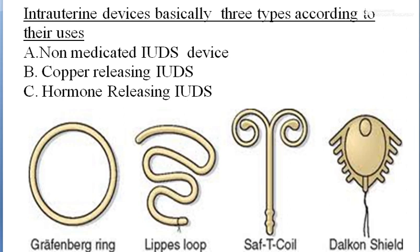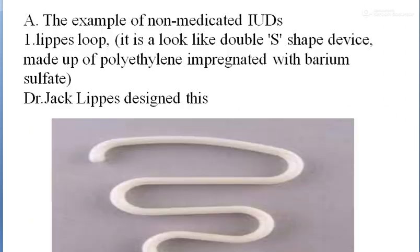As you can see in this picture, there are various types of IUDs. Grafenberg rings are the simplest type, included in the first generation of IUDs. Lippes loops are also first-generation IUDs. The most developed are the copper T IUDs, which have a T-shaped structure and represent the most advanced IUDs.